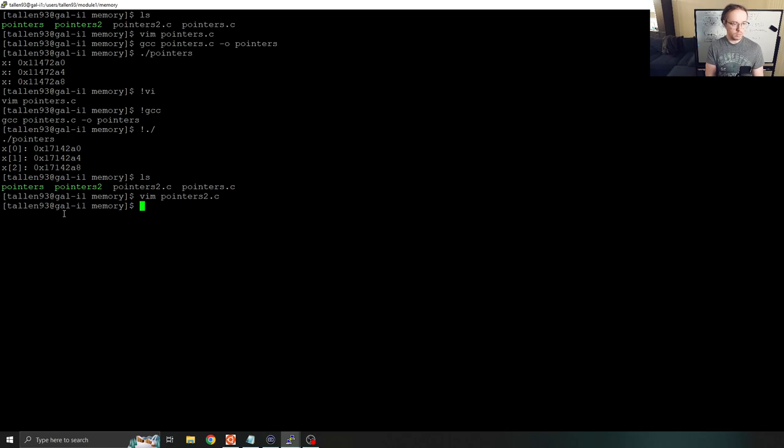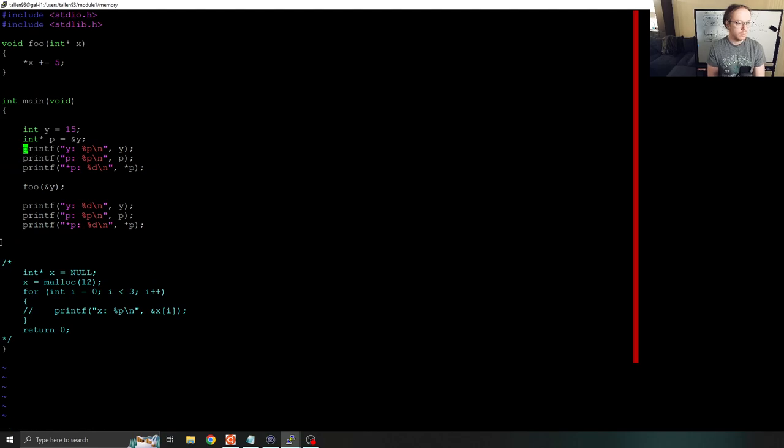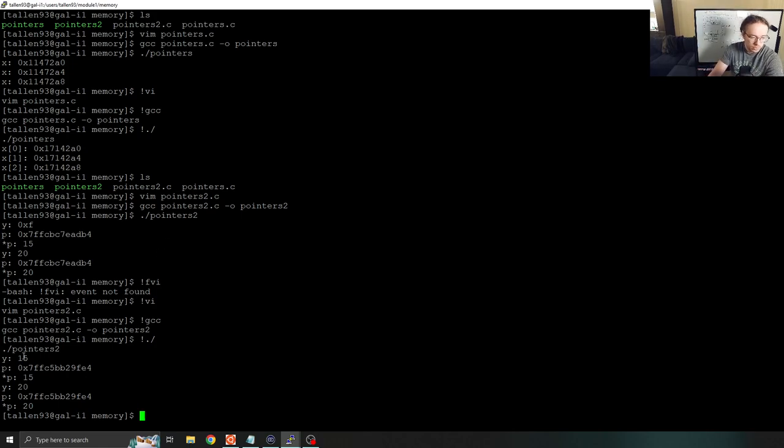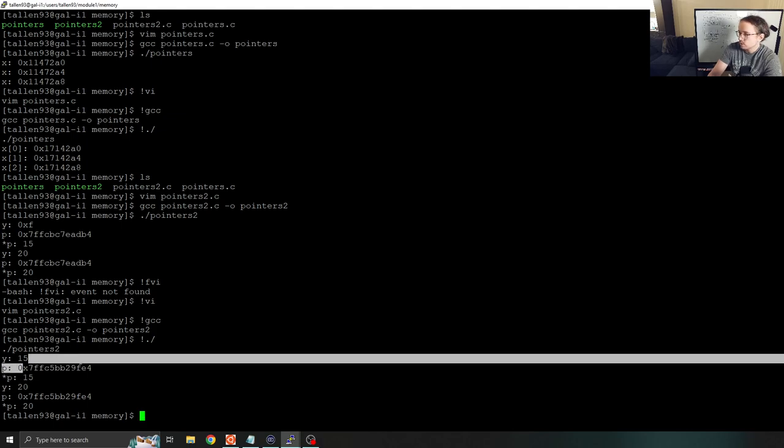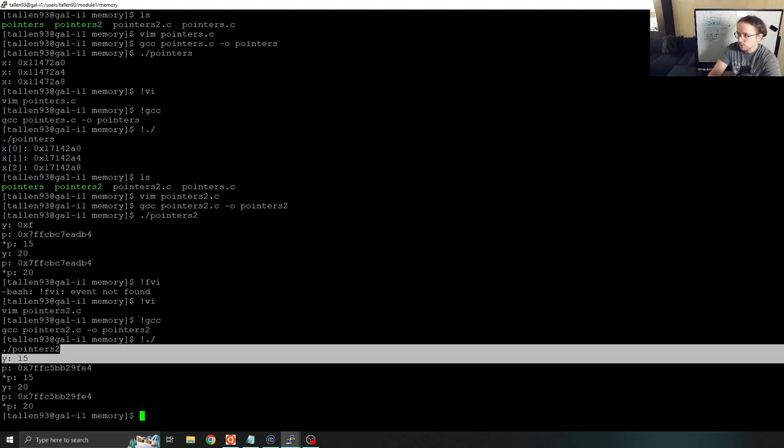Let's see what happens to our input. So we'll do gcc pointers 2.c, print out pointers 2, pointers 2. And what happens here is we get a value. Let's change it so that we print out y in, print out y as an integer and not as a pointer. So let's try that one more time. And what you'll see is y equals 15. We get some pointer, whatever the address, the stack address of y is. And then star p, of course, is 15, because p points to y. So dereferencing p gives us the same value as y.